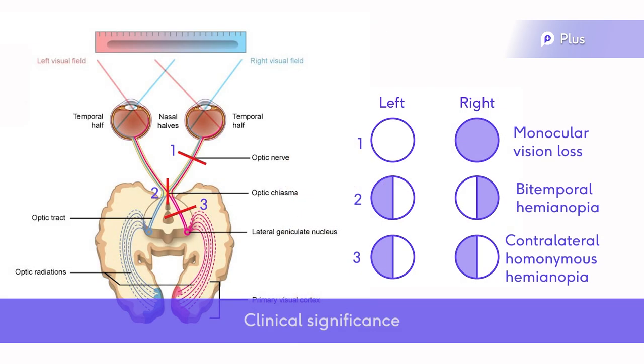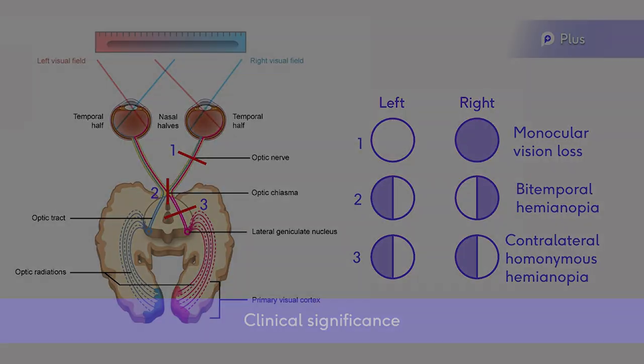A lesion to the nerve anterior to the optic chiasm results in vision loss in only the ipsilateral eye.